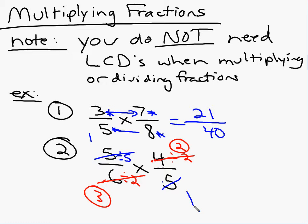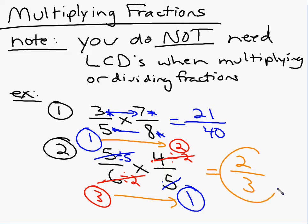So look what I have left. All the circled numbers that I have left, that's what I multiply by. What's 1 times 2? 2. Over what's 3 times 1? 3. The answer is 2 thirds. So you have to be able to factor diagonally before you do anything.